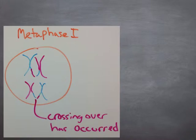As you can see, crossing over has now occurred. Crossing over occurred during prophase I. I couldn't really show you, but now that we're in metaphase I, you can see.